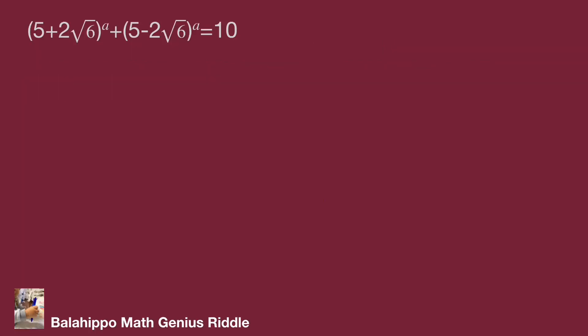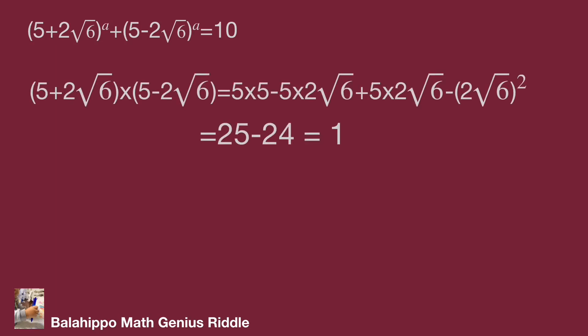Looking at the given equation — (5 + 2√6)^a plus (5 − 2√6)^a equals 10 — I'm going to find the relationship between (5 + 2√6) and (5 − 2√6). I find that if I multiply (5 + 2√6) and (5 − 2√6), the value is 1.